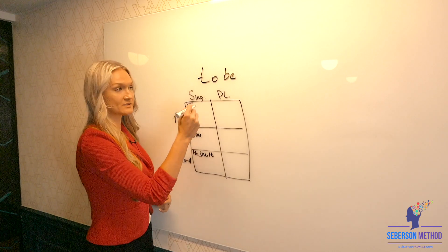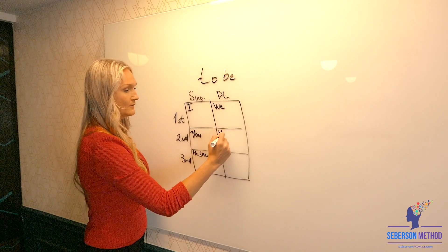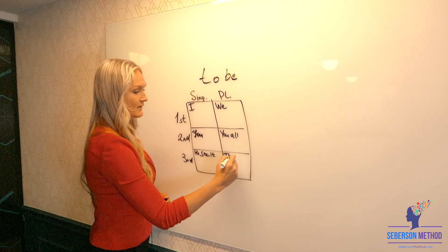Now what is my first person plural? I. We. You. You all. And then he, she, it. Be, they. So far so good, right?